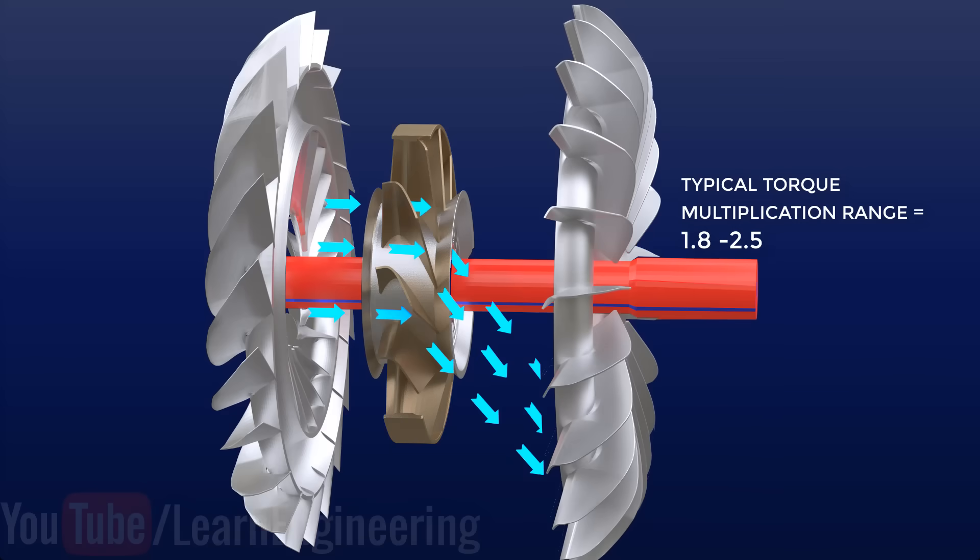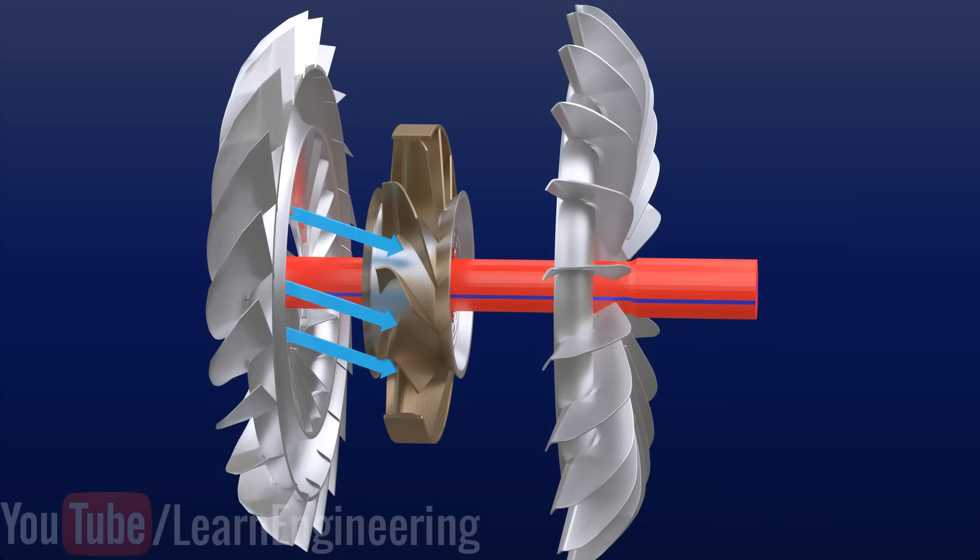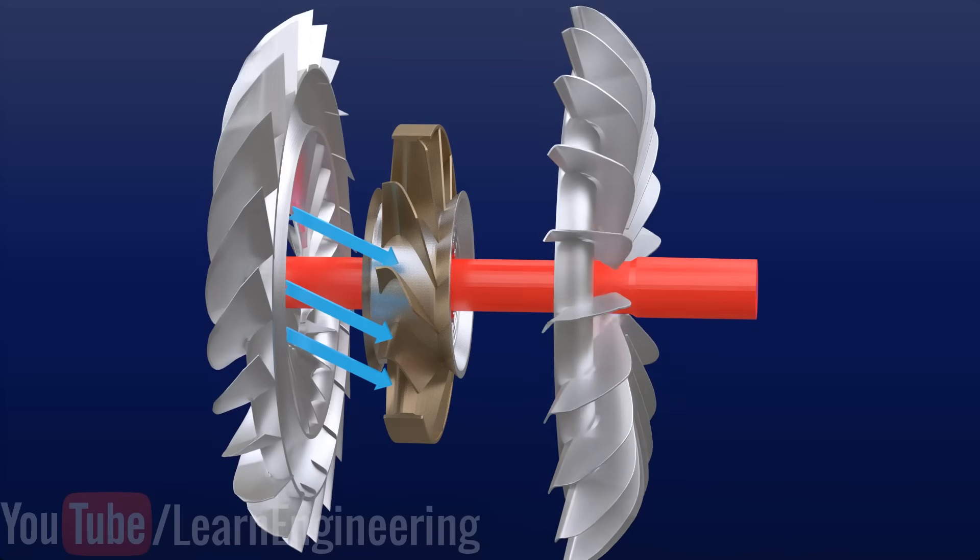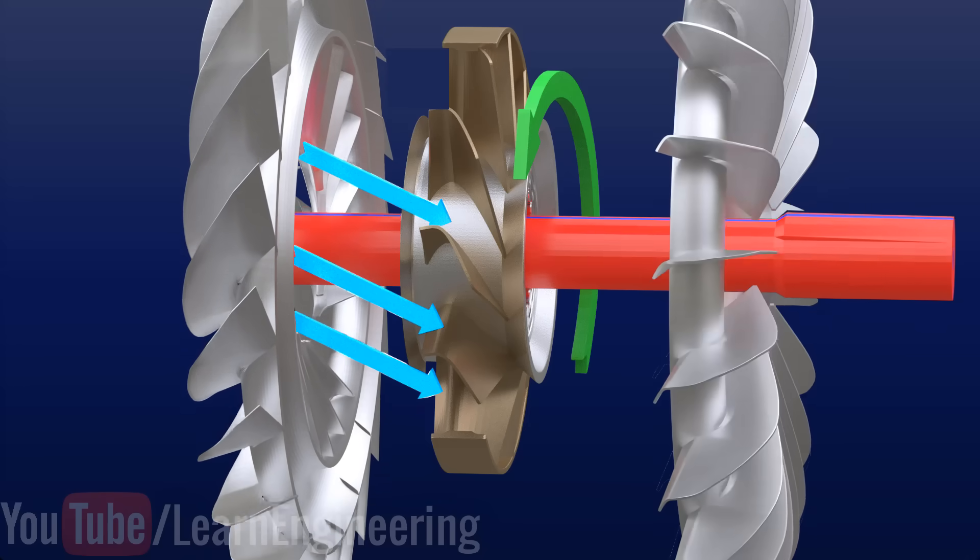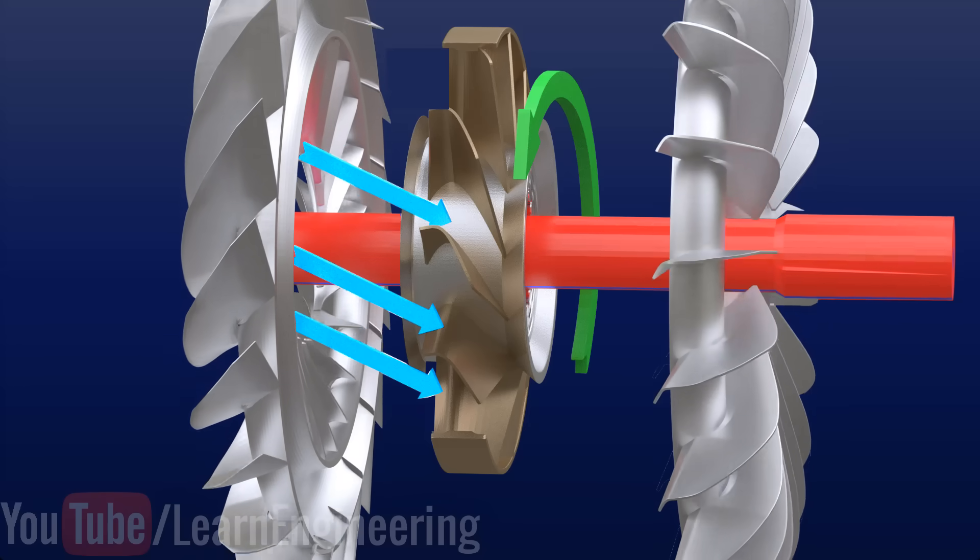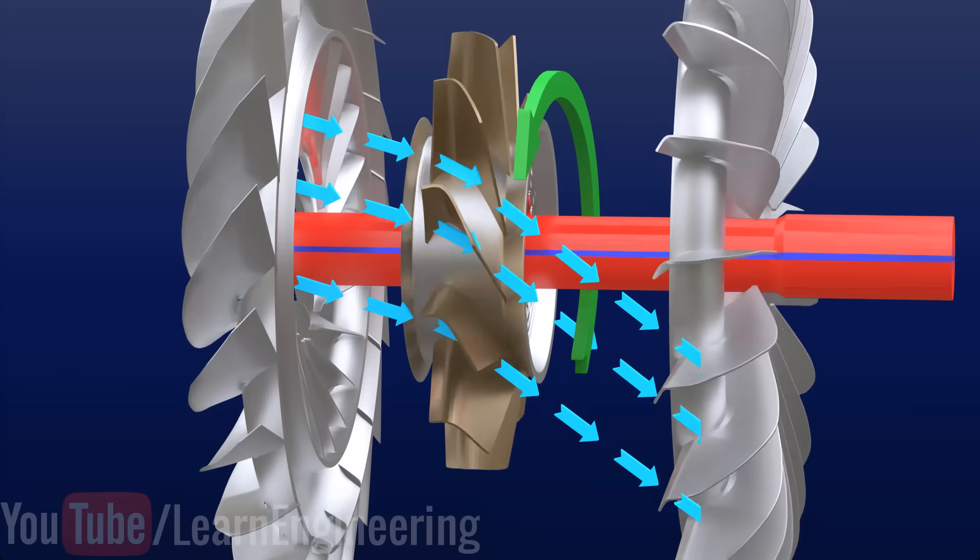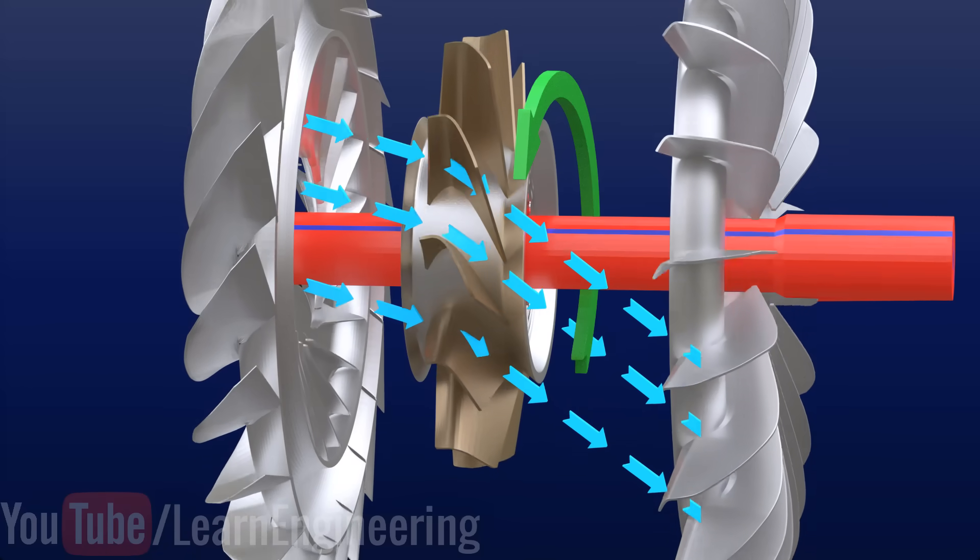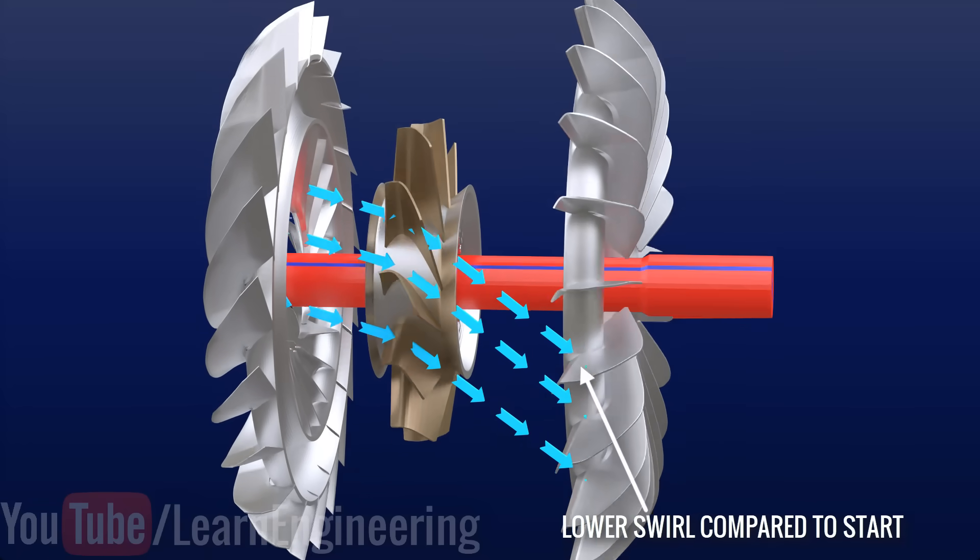However, as the turbine speed increases, the fluid leaving the turbine becomes more inclined as shown, and at one point of time, the inclined flow hits the other side of the reactor blades. The reactor is free to spin in this direction. So, the reactor spins in the same direction as the pump and the turbine. You can see that the swirl generation at the pump inlet is lesser than the previous case, and the torque multiplication ceases.